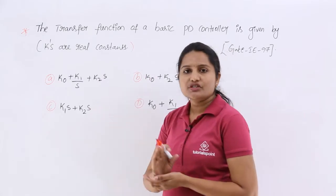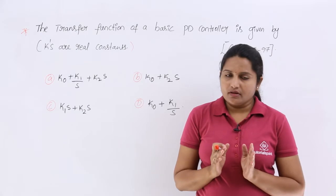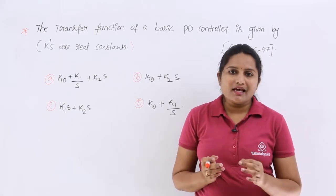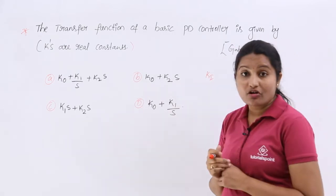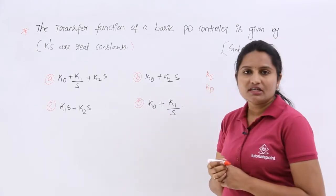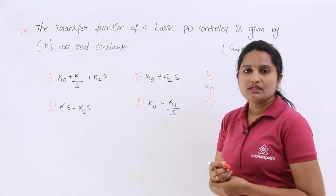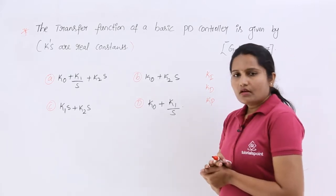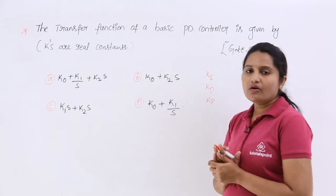These are the transfer functions they are given. But if you are following my videos, if you have seen that videos, I considered Ki for integral constant, Kd as differential constant for a differential controller, and Kp as proportionality constant for proportional controller. Here, they are given in terms of K0, K1, K2. How we can find that?